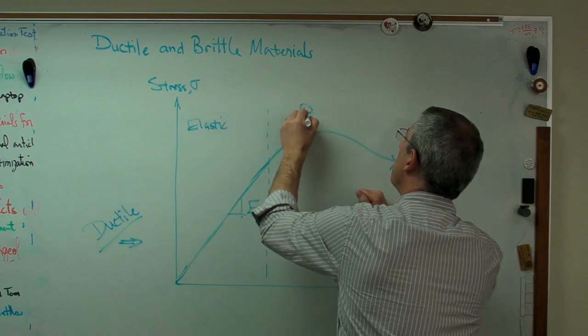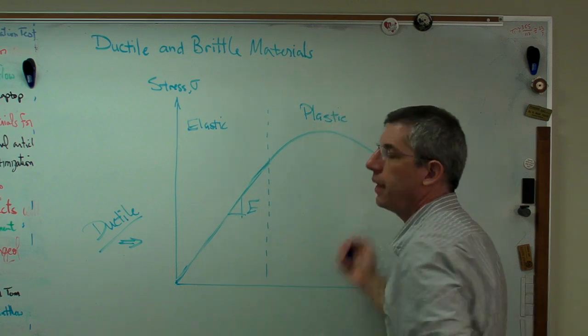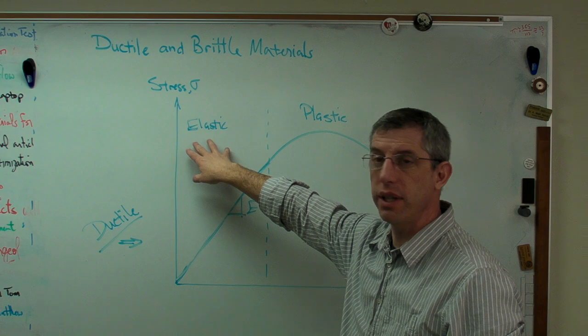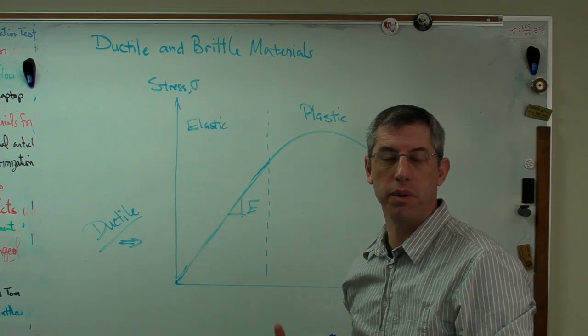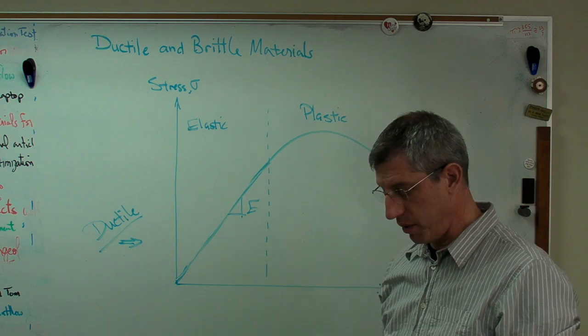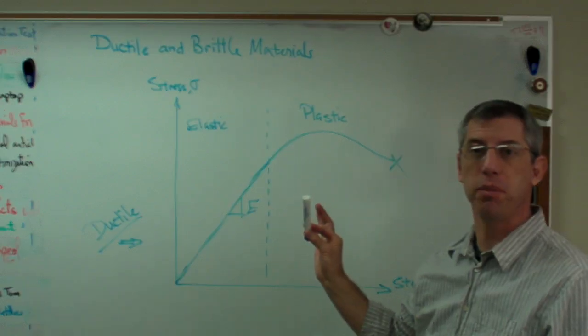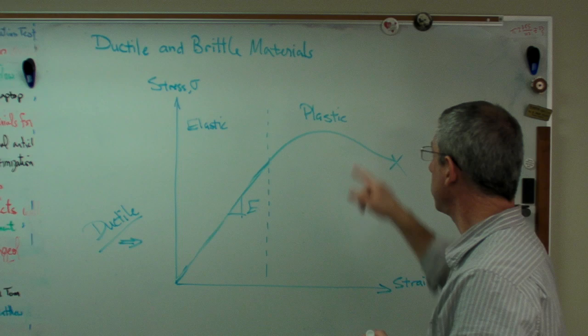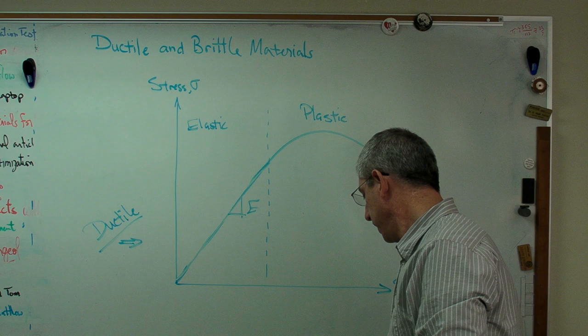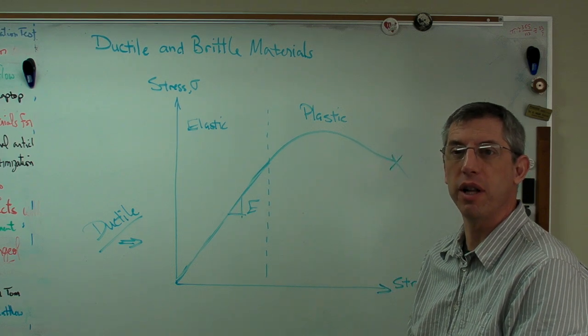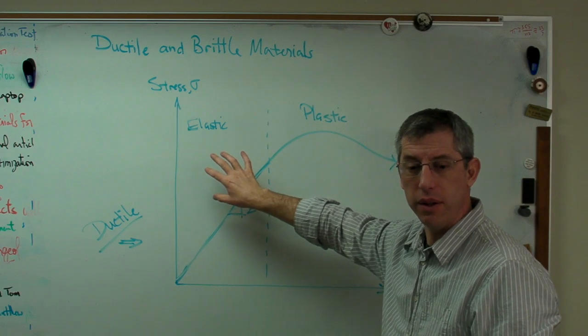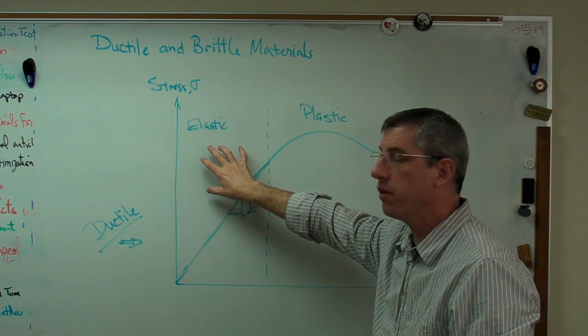Now if I were king of the world I'm not sure I would have called it this because elastic, there's a material called elastic, it shows up in clothes a lot. Plastic is a whole class of materials. This marker I'm using is made out of plastic. That's the plastic region. Same word means two different things. There's something about the way English develops, we tend to do that a lot.